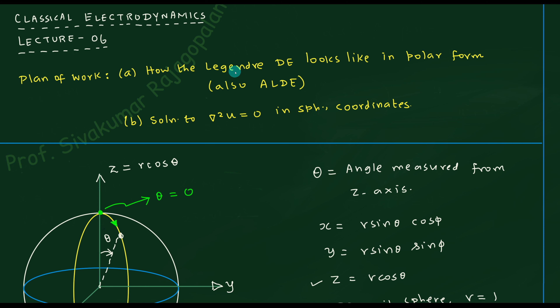So Legendre and associated Legendre will always go together — if you want to remember only one, take the associated Legendre, which has the additional last term; deleting that last term gives back the Legendre differential equation. Once you understand how the Legendre equation works in polar coordinates for our three-dimensional spherical system, we are immediately ready to discuss how to solve the Laplace equation in spherical polar coordinates.